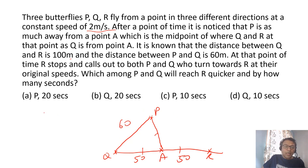It is known that distance between Q and R is 100. So that means this will be 50 and 50 each and this will mean P and Q is 60. At that point of time, R stops and calls both P and Q who turns towards R at the original speed. Now since these three lengths are equal, I normally look at a diameter and a radius and a diameter subtends a right angle at any point on the circle. So if these three are equal, that means this has to be a right angle. Q, R is a diameter, P will lie on the circle because A becomes the center and A, Q becomes the radius.